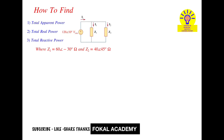Welcome to Focal Academy. In this problem, a circuit is given with a voltage source. The RMS voltage is given in phasor form and is connected across two impedances Z1 and Z2, where Z1 is given as 60 at angle minus 30 degrees ohms, and Z2 is given as 40 at angle 40 degrees ohms.